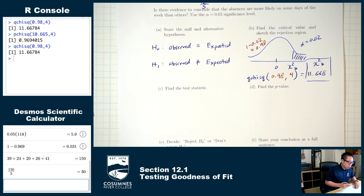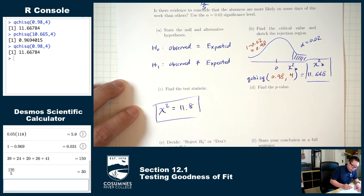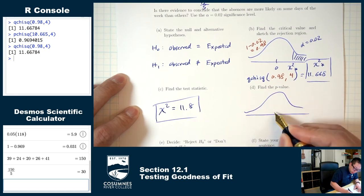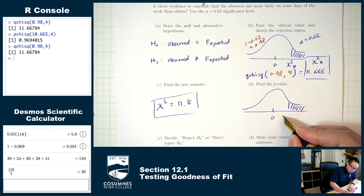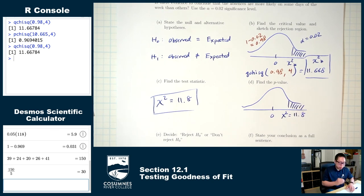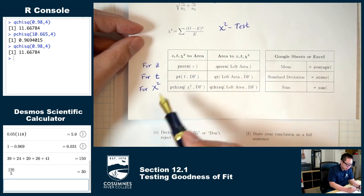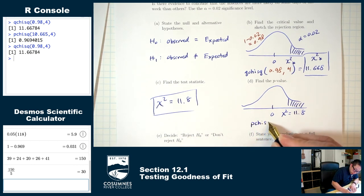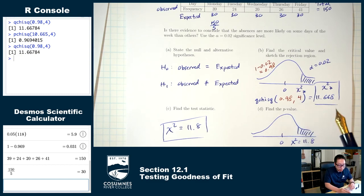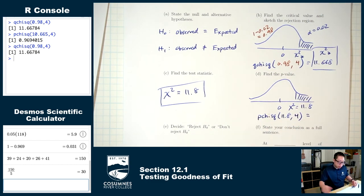The test statistic we found was 11.8. Part D: draw the picture — chi-square always shaded to the right. Put the test statistic on the picture and find the shaded area, the p-value. Chi-square to area: pchisq(11.8, 4), where df = 5 categories minus 1 = 4.